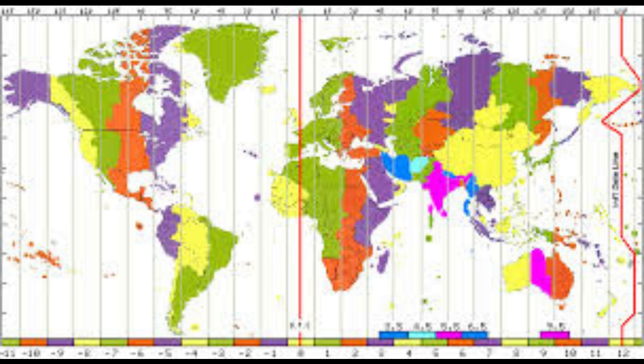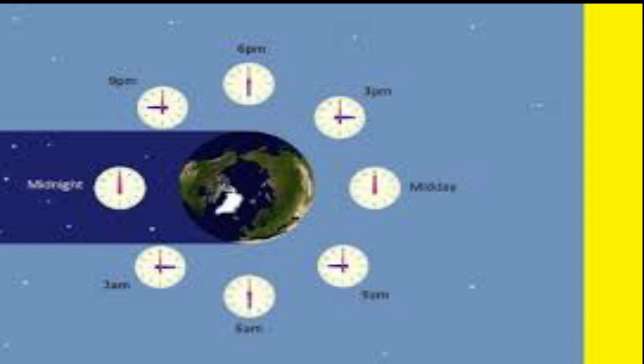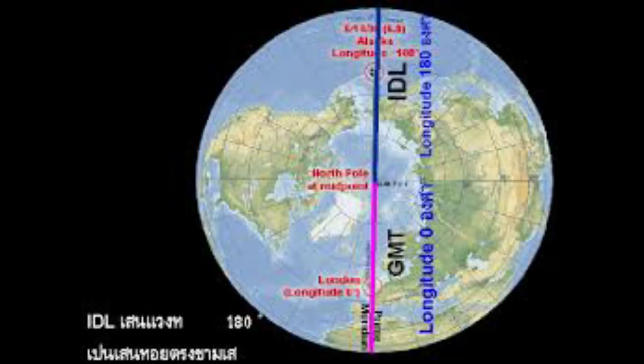Let us study about the time zones. The local time of a place is fixed on the position of the sun. When the sun shines exactly overhead, it is midday or 12 noon at that place. Midday occurs at different times at different meridians. The time in each zone is calculated by Universal Time, also known as Greenwich Mean Time, that is GMT.